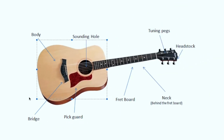Let's begin with the head. This part is known as the headstock — some people call it headstock, some simply call it head. There are some turning keys here which you use to tune the guitar; these are known as tuning pegs, and you can also call them machine heads.